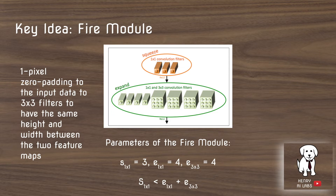The Fire module is defined by three parameters: the number of convolutional filters in the Squeeze layer, the Expand 1x1s, and the Expand 3x3s. In the diagram shown, there are three 1x1 convolutions in the Squeeze layer, and four 1x1s and four 3x3s in the Expand. A key constraint is that the Squeeze filter count is usually much less than the Expand.